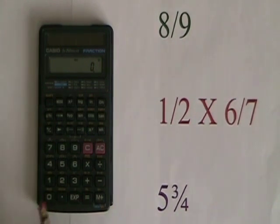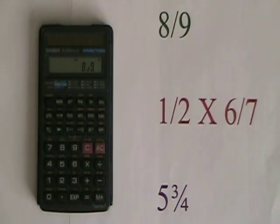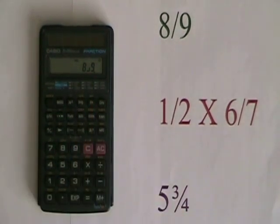We do this by pressing 8, ABC, 9. The ABC is the fraction key, and pressing 8, fraction key 9 enters the fraction 8 ninths, and this is what it looks like in the display of the calculator.